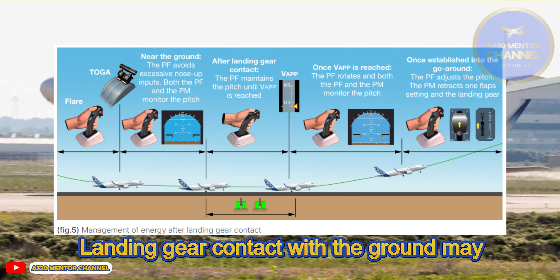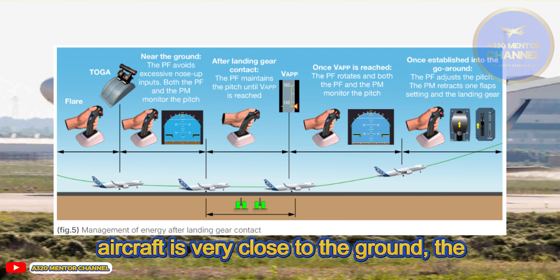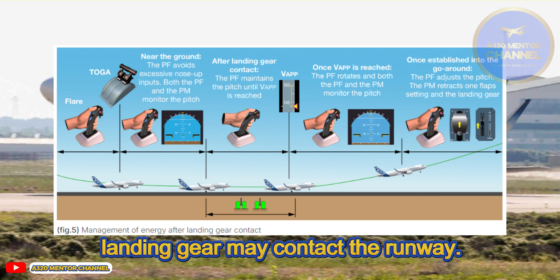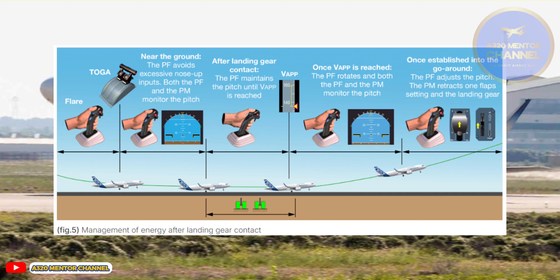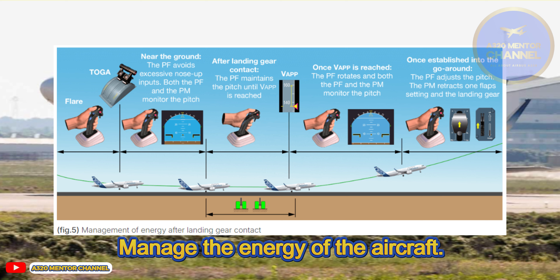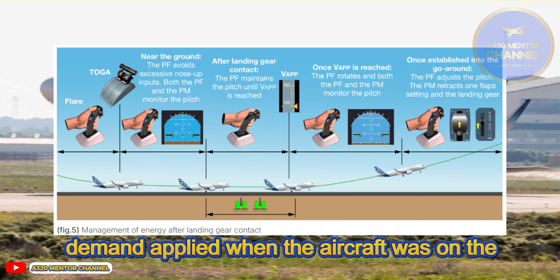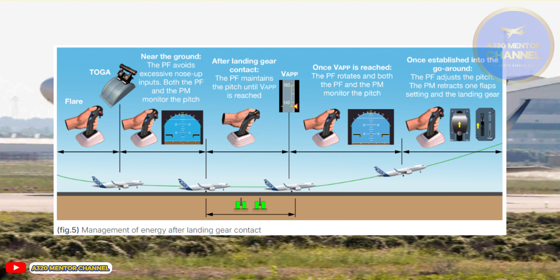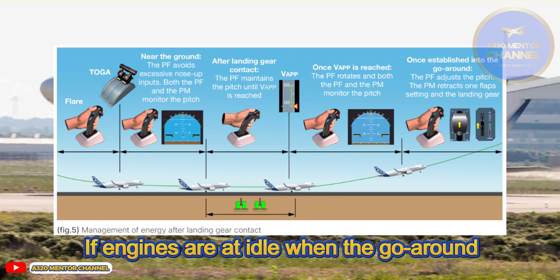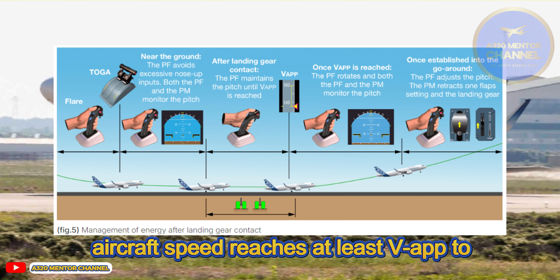Landing gear contact with the ground may happen. If the go-around is initiated when the aircraft is very close to the ground, the landing gear may contact the runway. The PF should not try to avoid this contact by further increasing the pitch. Manage the energy of the aircraft: in many reported cases, the high nose-up demand applied when the aircraft was on the ground and at low speed led to the tail strike. If engines are at idle when the go-around is initiated, they can take a few seconds to spool up. The flight crew should wait until the aircraft speed reaches at least V-app to rotate the aircraft.